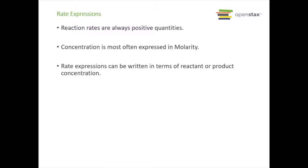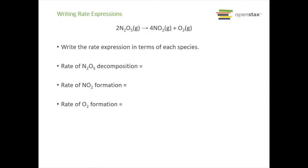We can write rate expressions to give a mathematical representation of a rate of reaction. Reaction rates are always positive quantities; concentration is generally expressed in molarity. Rate expressions can be written in terms of reactant or product concentration. For example, with the reaction 2N₂O₅ → 4NO₂ + O₂, we can write rate expressions for each species. The rate of decomposition of N₂O₅ has a negative change in concentration since it's going down over time.